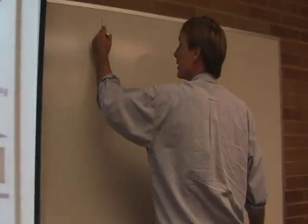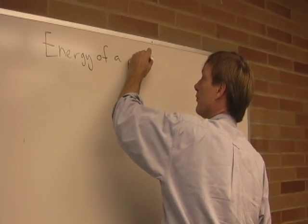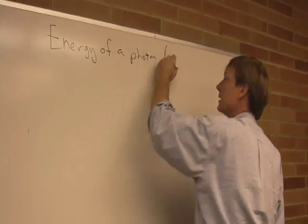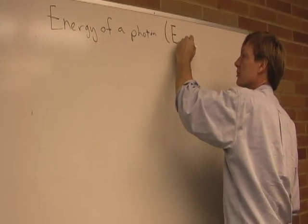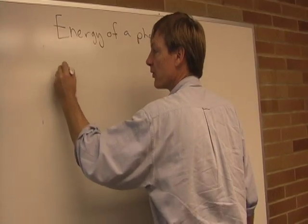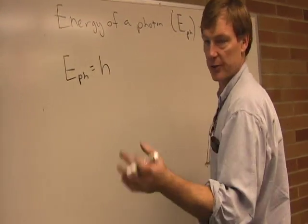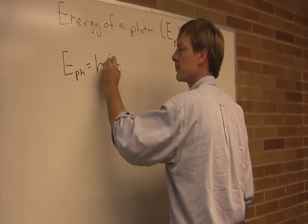So here's the deal. Energy of a photon, and I'm going to call that E for energy, and pH for photon, a little subscript there. And the energy of a photon is something called Planck's constant. It's just this constant, I'll give it to you in a minute, times the frequency.